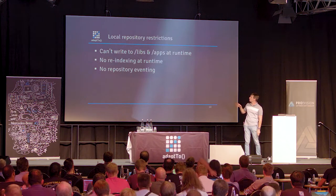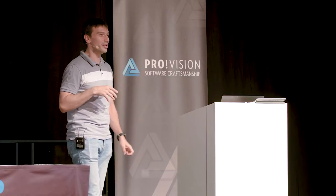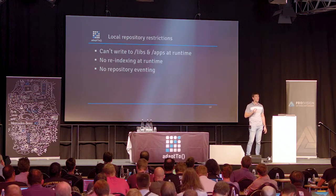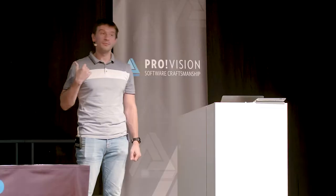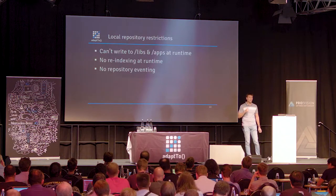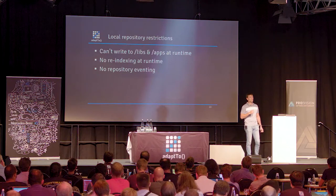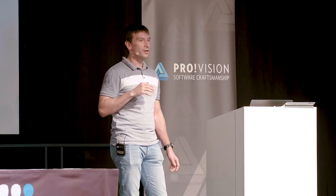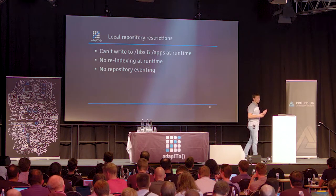The next two restrictions are a consequence of the first. Maybe at first they're not really obvious, but I need to state them. Since you don't have changes to libs or apps at runtime, there's no re-indexing at runtime. The good part is that indexing can be pre-compiled at build time, so you don't really need re-indexing during runtime. And the third aspect is that there will be no repository eventing for these paths — since there won't be any changes to libs or apps, but if the application is relying on that, it might run into problems.